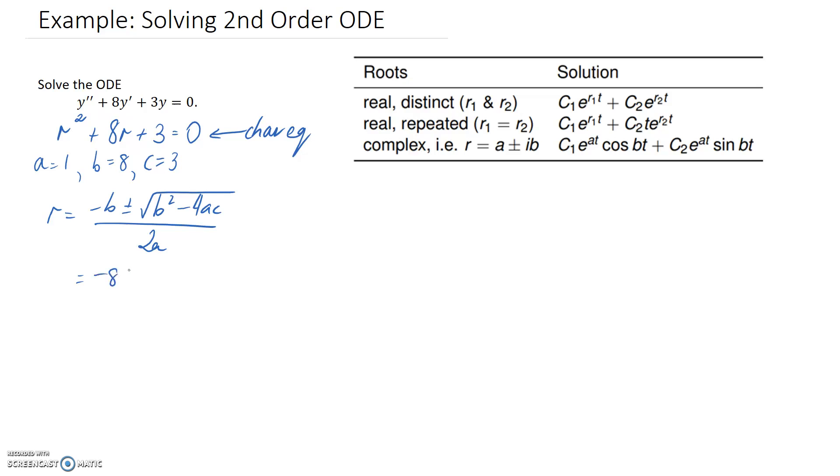So it's just a matter of now substituting our values into it. Alright, so we can simplify what's inside this square root and if you type it into a calculator it comes out to 52, and then it's all divided by 2.